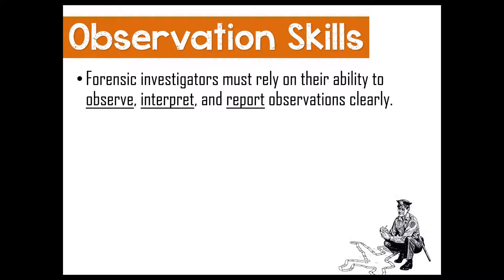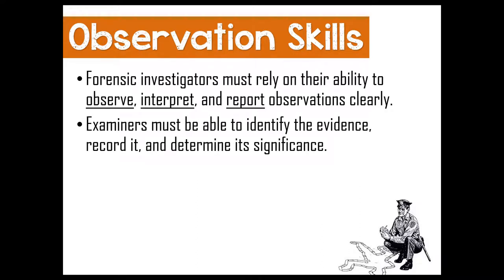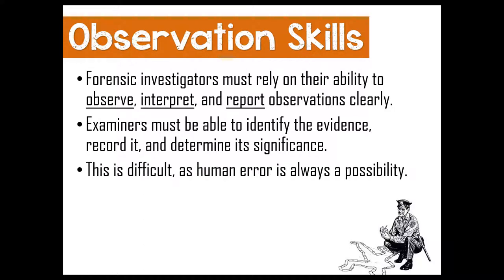Forensic investigators rely on their ability to do a few things: first, observe — they need to get to a crime scene and observe their surroundings; then interpret the things that are important and separate those from extraneous information; and finally, report their observations. Examiners have to be able to identify evidence, record it, and determine its significance — which sounds easy, but any investigator will tell you it's not that simple.